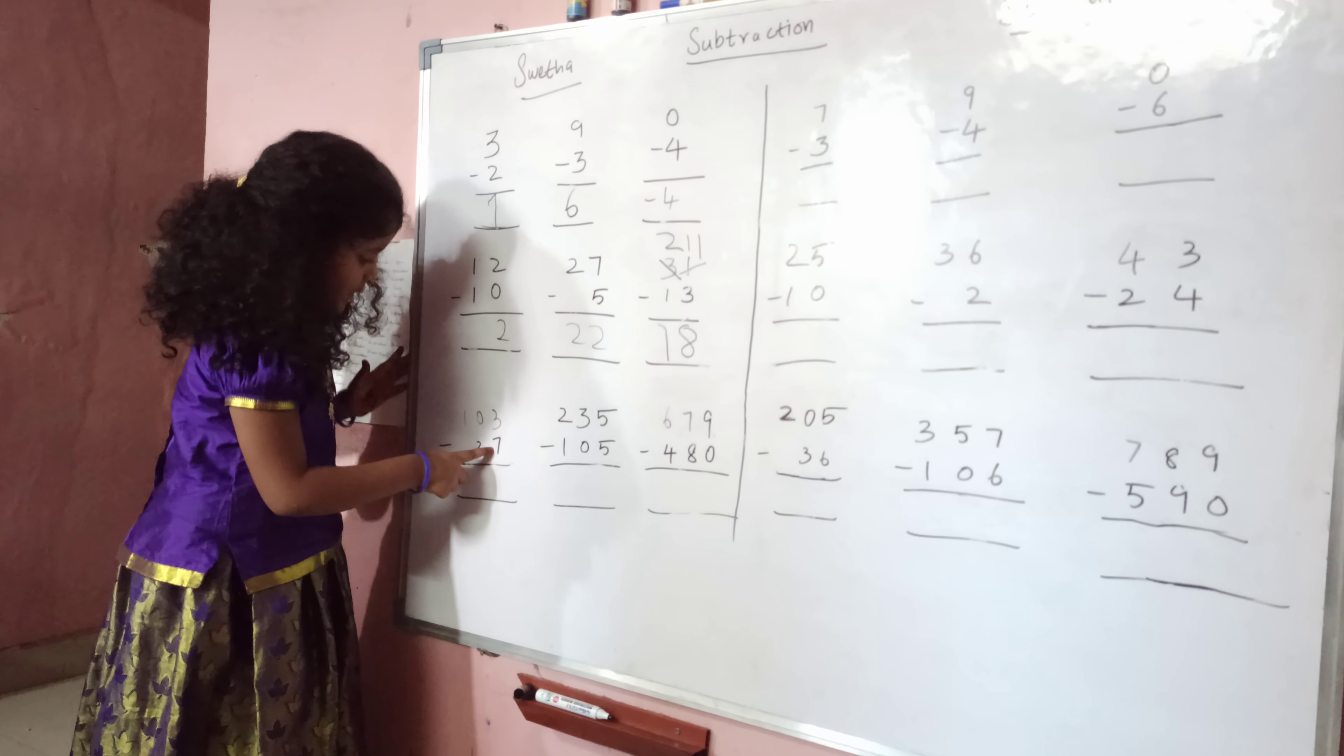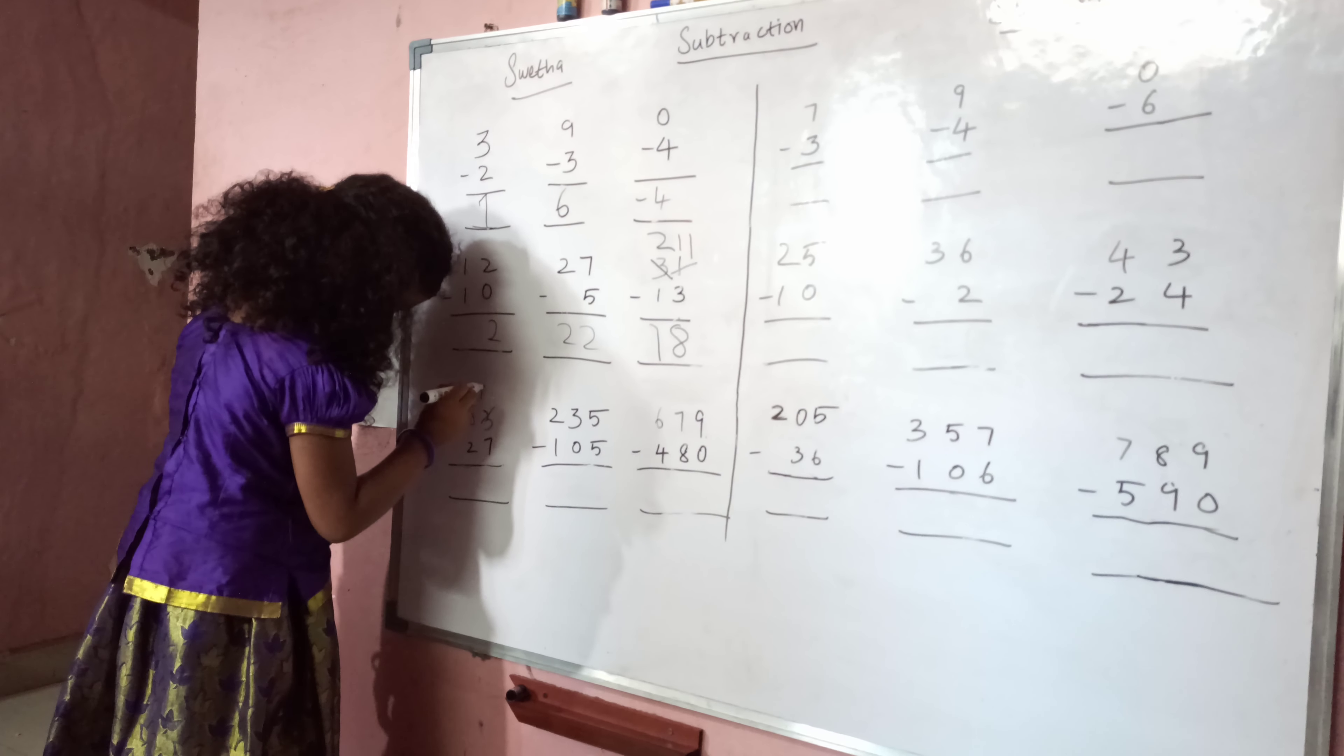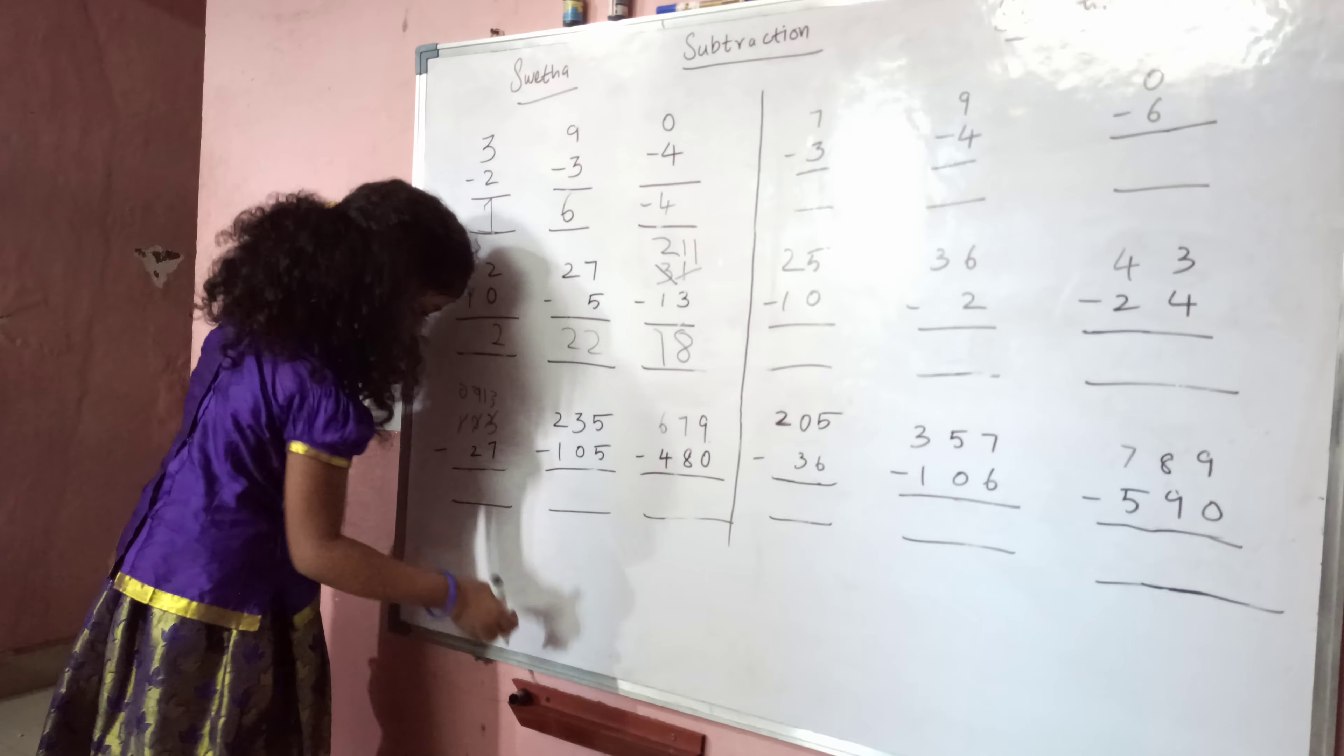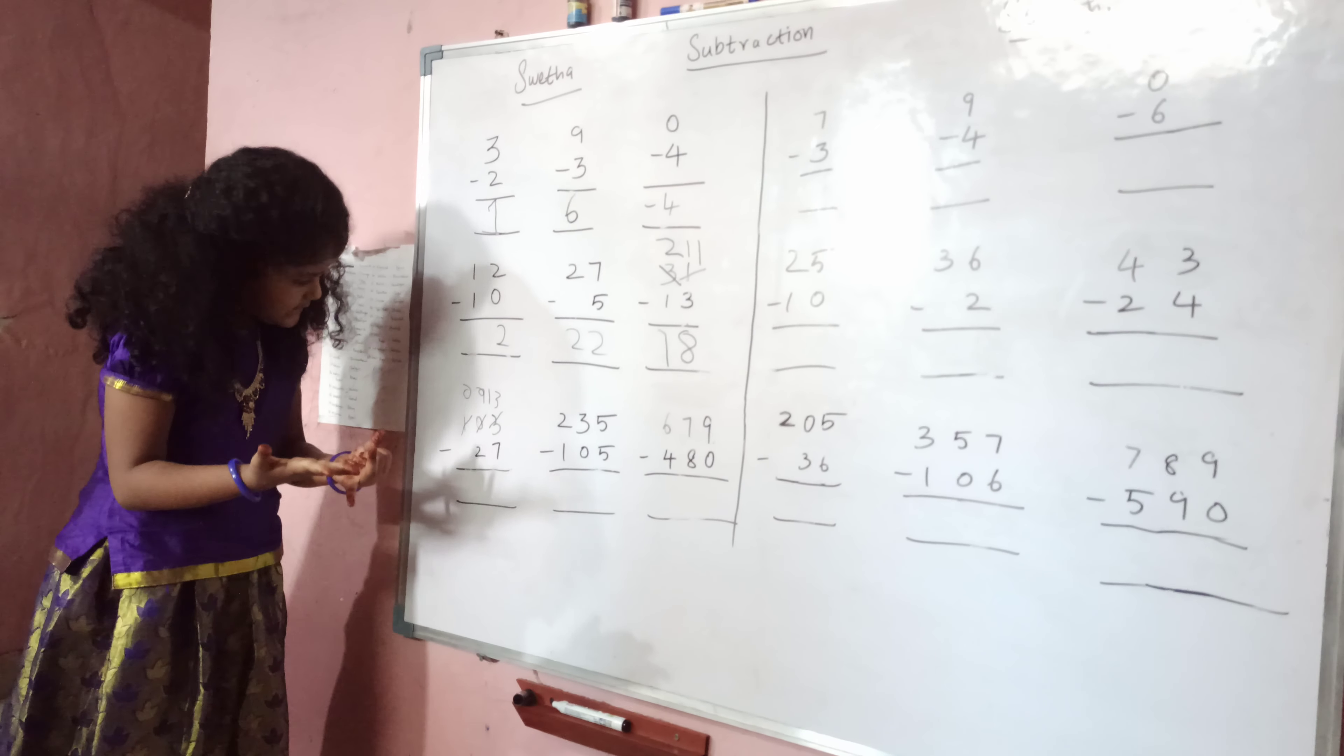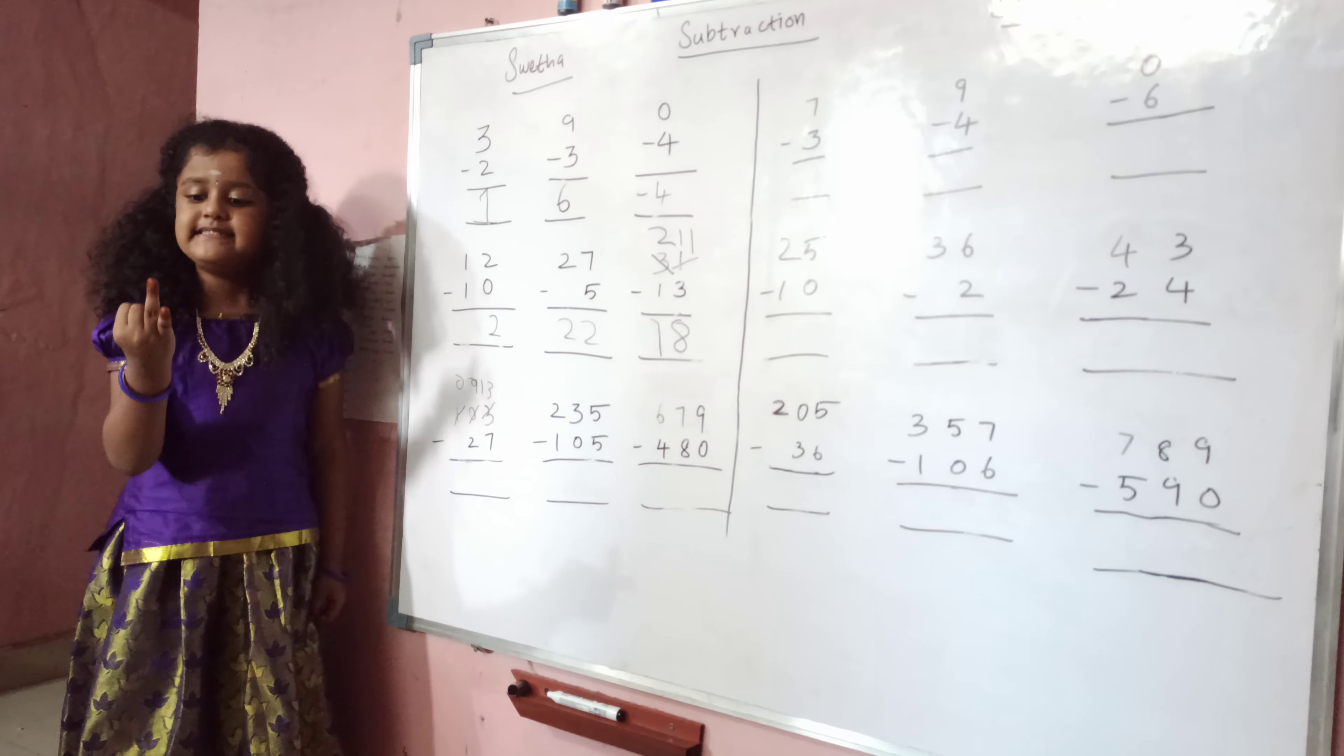Seven is the bigger number, borrow one. Thirteen in the mind, seven in the finger. Before thirteen, twelve, eleven, ten, nine, eight, seven, six.